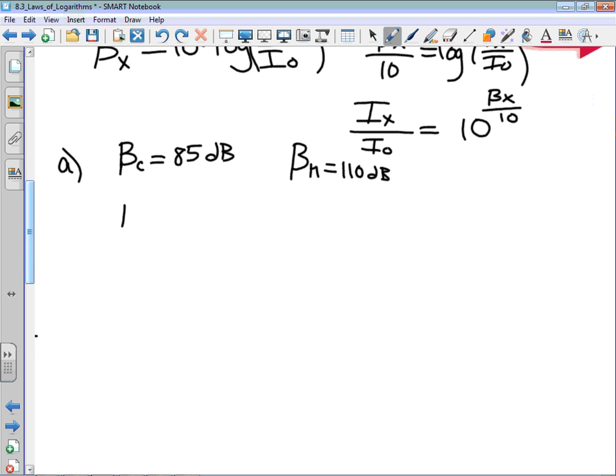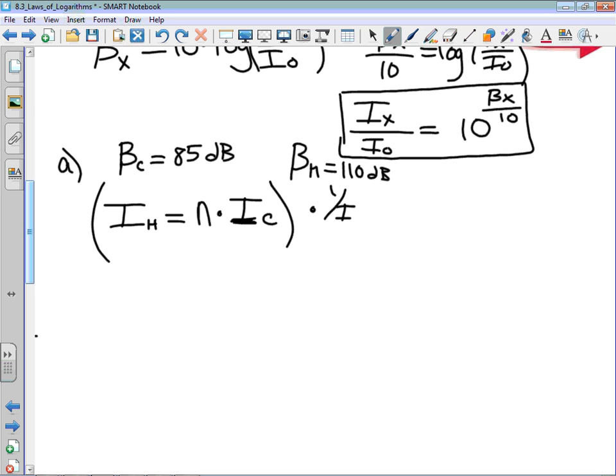It wants us to relate the intensity of our headphones to some unknown. I'm going to make it N times the intensity of the chainsaw. Because we have the decibel readings, we're going to use this formula. What we're going to do is get both of these intensities related to I0, and the way we do that is we multiply the entire equation by one over I0.